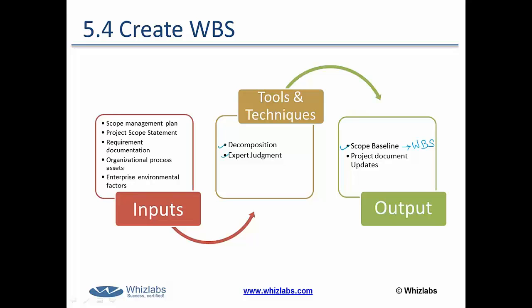The primary input you need is the scope management plan and the detailed project scope statement created in the previous process. Along with that, you also need the requirement documentation, which was the output of the collect requirements process. Additionally, two common factors apply: organizational process assets and enterprise environmental factors. This is one of the most important topics of scope management as well as PMBOK 5.0.